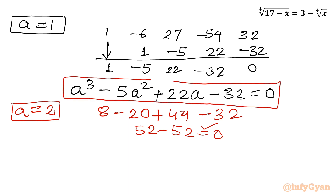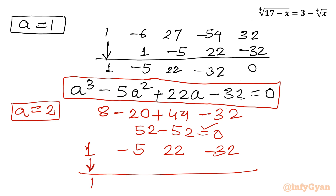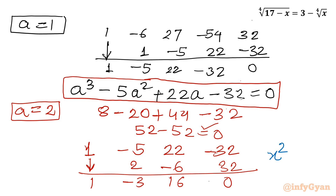Writing the coefficients of the cubic — 1, minus 5, 22, minus 32 — and performing synthetic division with root a=2: bring down 1; 1×2=2, giving minus 3; 2×(minus 3)=minus 6, giving 16; 2×16=32, remainder 0. The resulting quadratic is a² minus 3a plus 16 equal to 0.